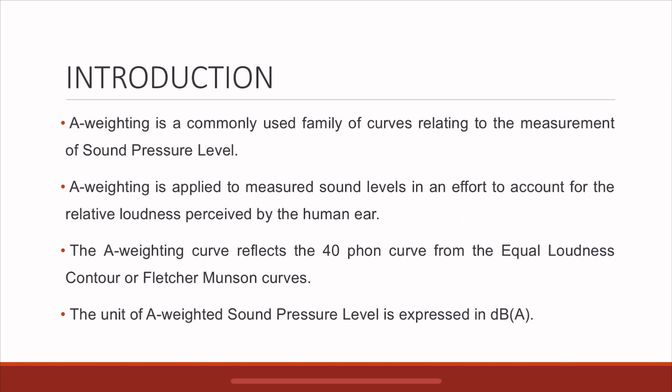A-weighting is applied to measured sound levels in order to account for the relative loudness perceived by the human ear. This curve represents the 40-phon curve from the equal loudness contour curves or Fletcher-Munson curves. The unit of A-weighted sound pressure level is expressed as dBA, with the A in parentheses signifying that it's A-weighted.